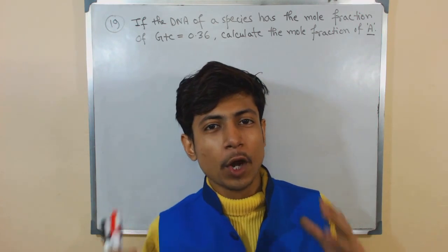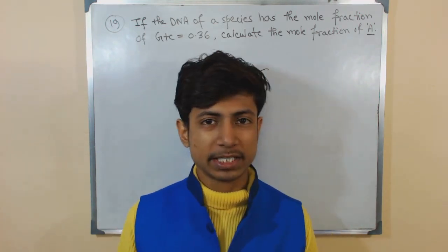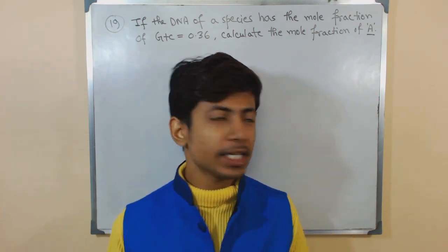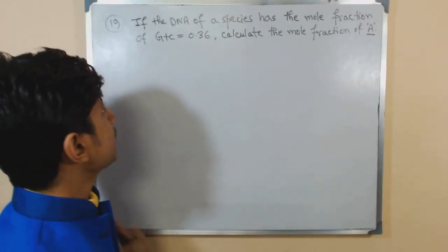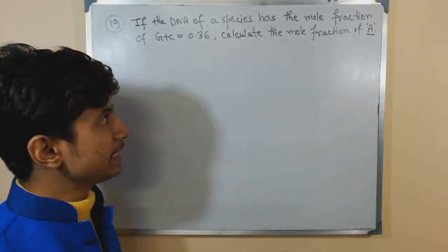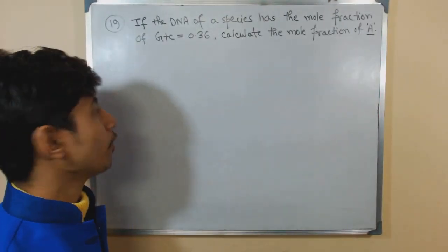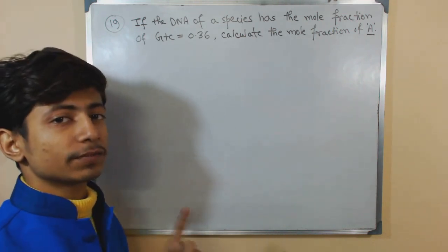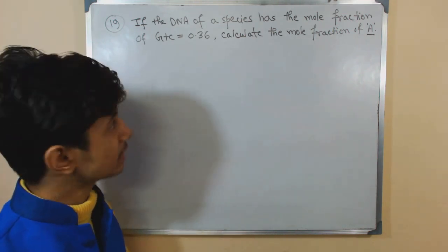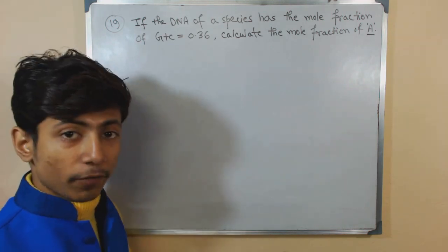Welcome again guys, we are talking about biology problems, mathematics related to biology. Here comes another problem for you: if the DNA of a species has the mole fraction of GC, that is the GC content, of 0.36, calculate the mole fraction of A.